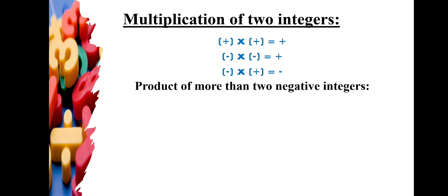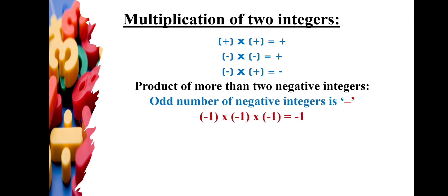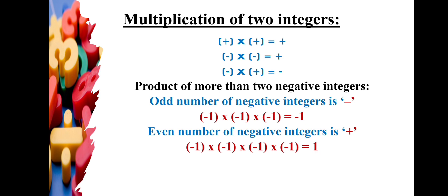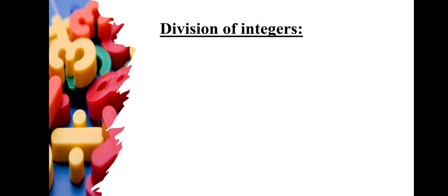When multiplying more than two integers: multiplying any number of positive integers gives a positive result. For negative integers, multiplying an odd number of negatives always gives a negative result. Multiplying an even number of negative integers — for example two or four negative integers — gives a positive product.